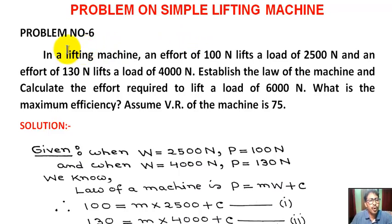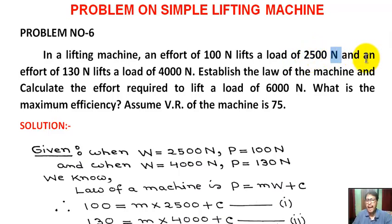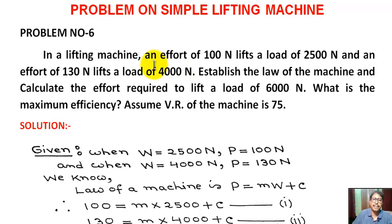Today we solve problem number 6. In this problem, in a lifting machine, an effort of 100 Newton lifts a load of 2500 Newton. First case: effort applied is 100 Newton, load lifted is 2500 Newton.